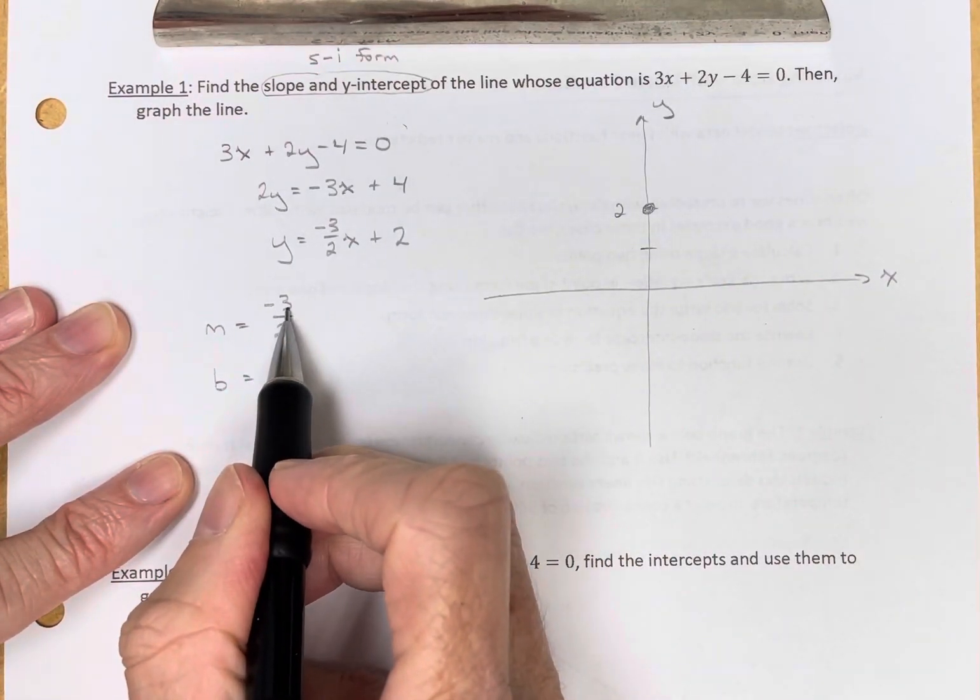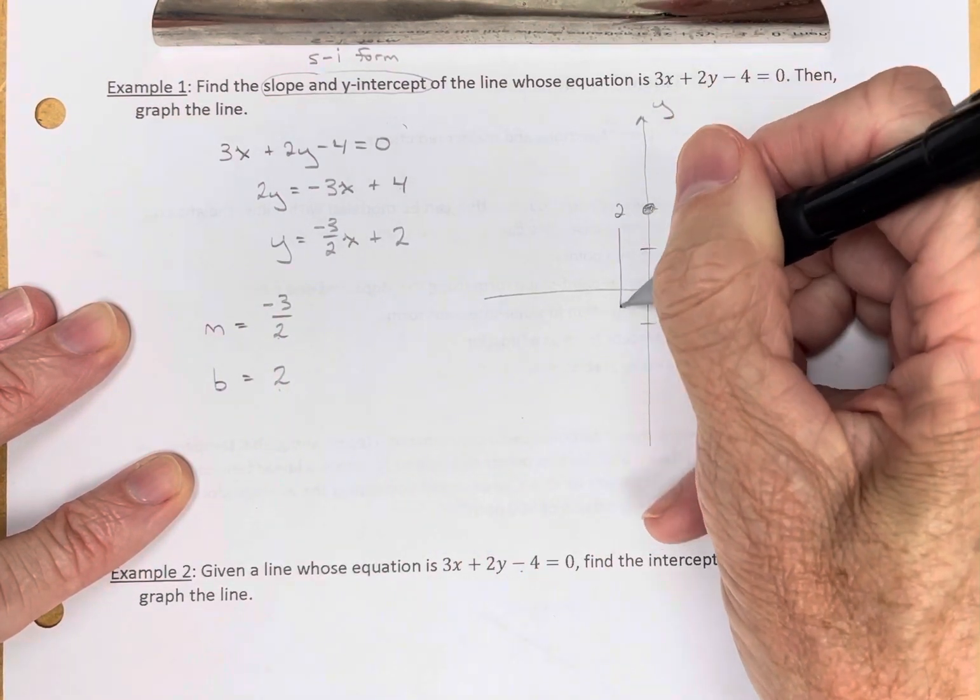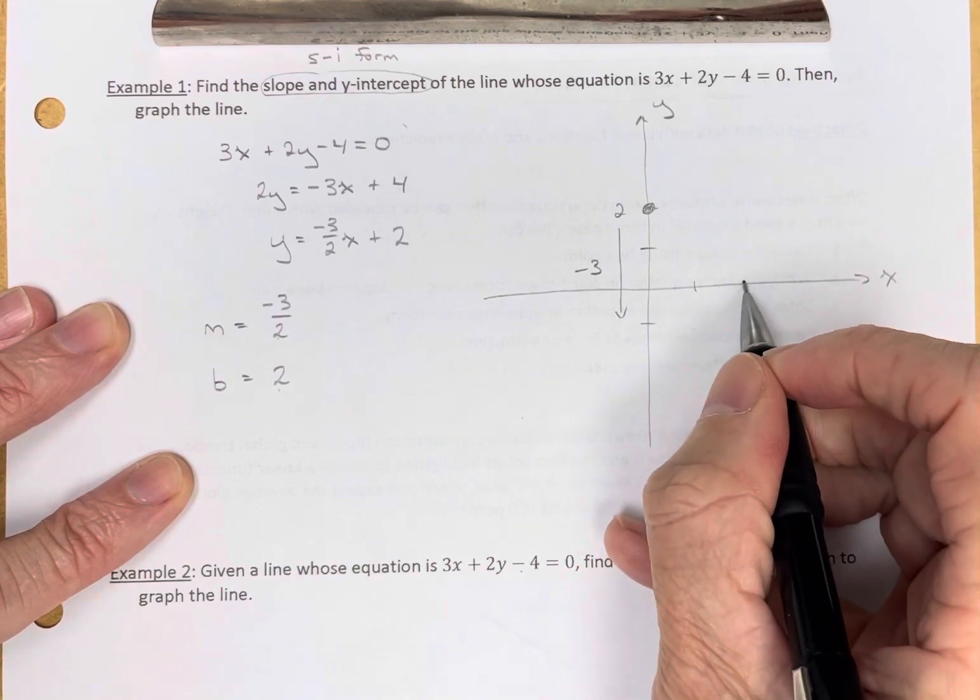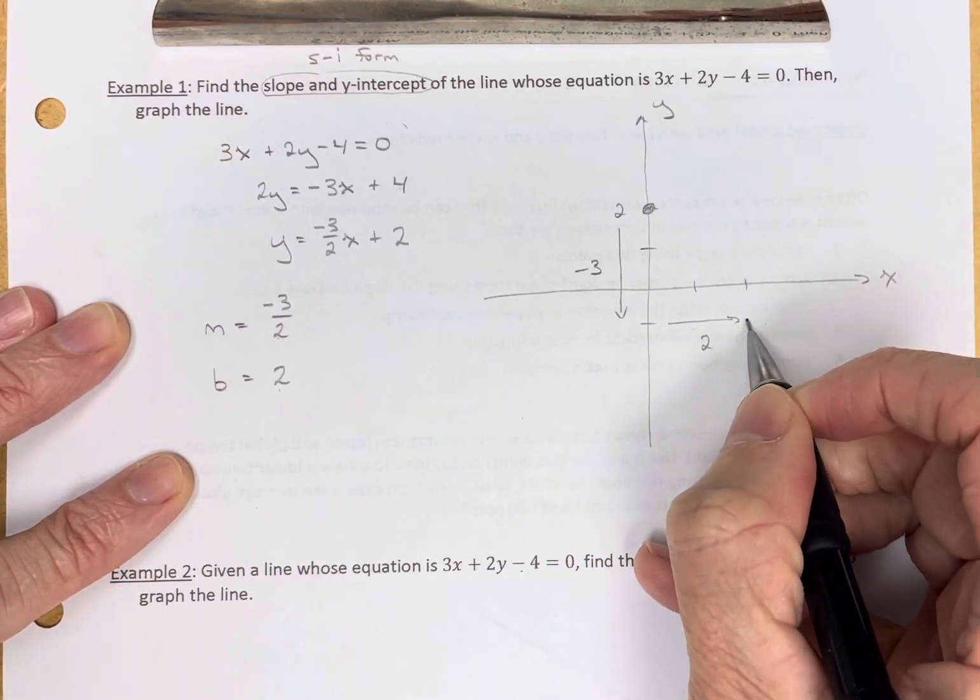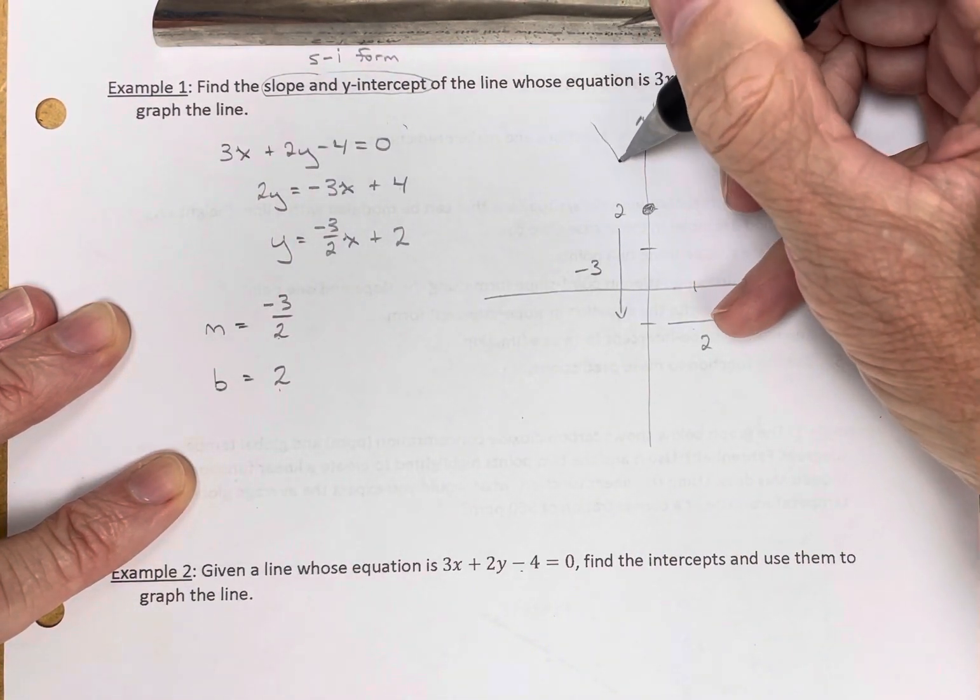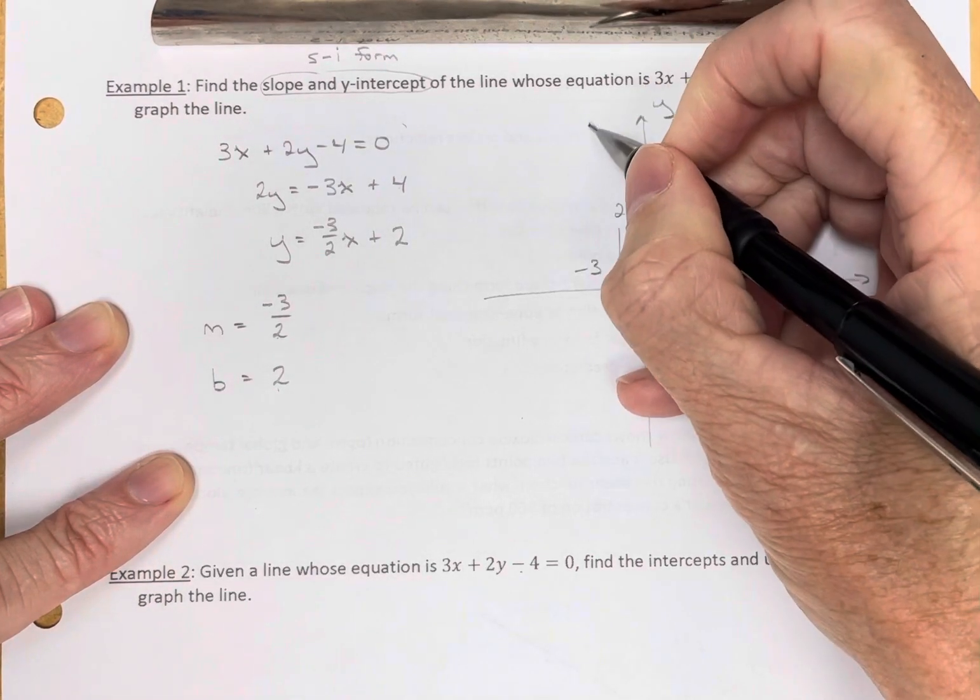The slope goes down 3 and then runs 2. So we'll go down 3, and then we're going to run 2 and put a point right here, and then we simply need to connect those, and there's the line.